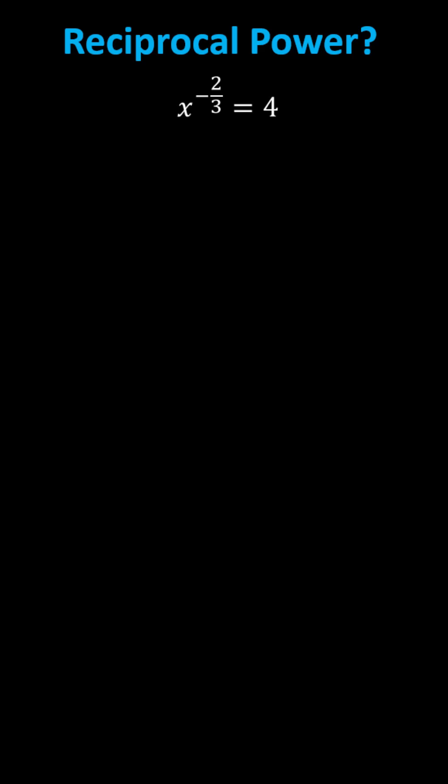Let's solve x to the power of negative two-thirds equals four. We will not use reciprocal power because by doing so, we will only determine one of the two solutions.